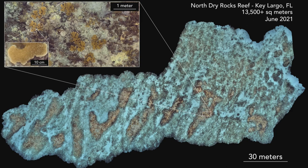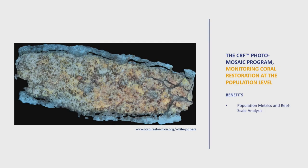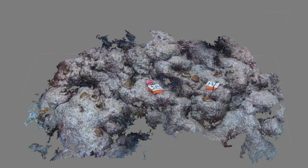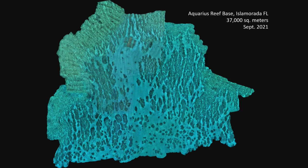These are some of our Elkhorn coral outplants that actually just spawned en masse about a month ago — really phenomenal. This is how we can now assess how our restoration is actually working. Similarly, we can scale this up. When the mosaic loads, what you'll see is an area of 37,000 square meters in a single image file. This is the Aquarius Reef Base off of Islamorada, Florida. It's a phenomenal site, but in pretty deep water — the habitat itself sits in a basin about 60 feet deep, with ridges coming up to about 40 feet and slopes down to 90 to 100 feet.